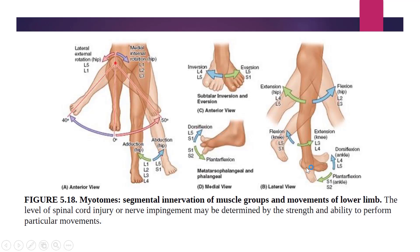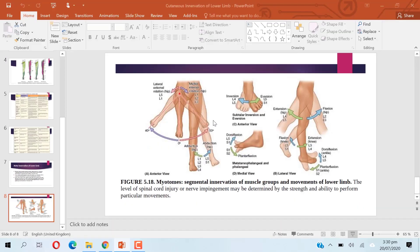Dorsiflexion at the ankle joint — moving the whole foot toward the dorsal surface — is caused by muscles innervated by L4 and L5. Plantar flexion at the ankle — moving the whole foot toward the sole or toward the ground — is caused by muscles innervated by S1 and S2. These are the movements of the lower limb and their corresponding spinal cord segment innervations.